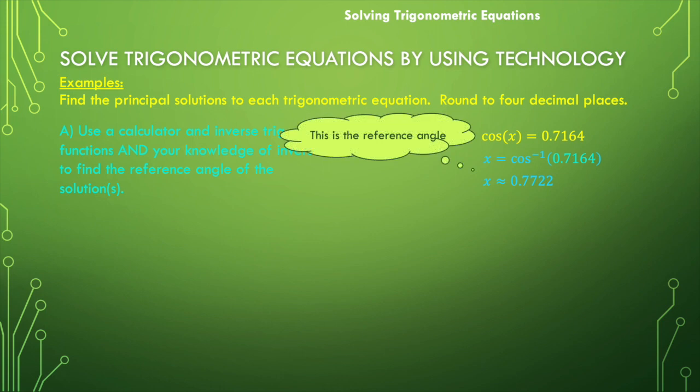And we would get x is approximately 0.7722. That is the reference angle. It's positive and it's acute. If you get something out of your calculator that is between 0 and 1.57, that is definitely the reference angle.